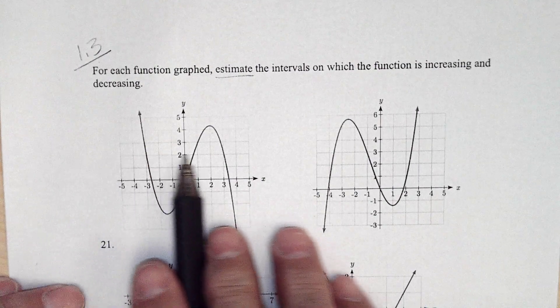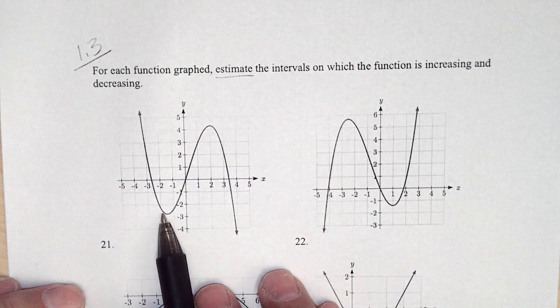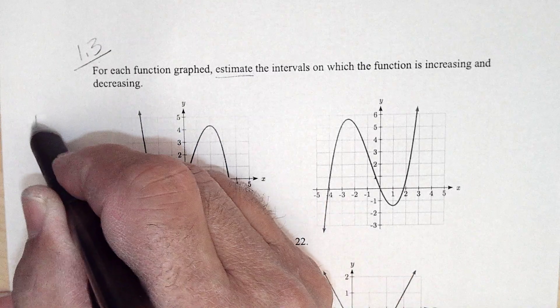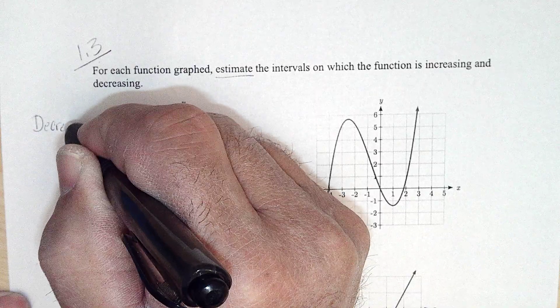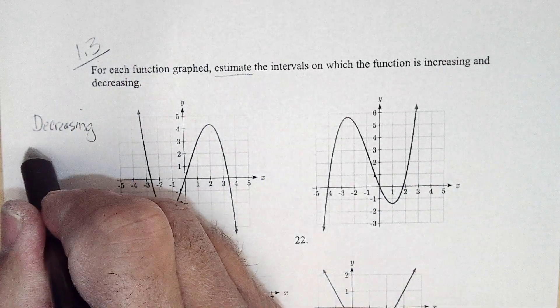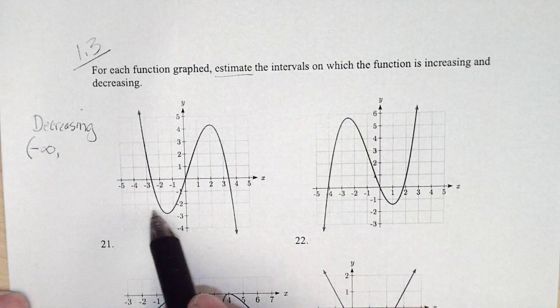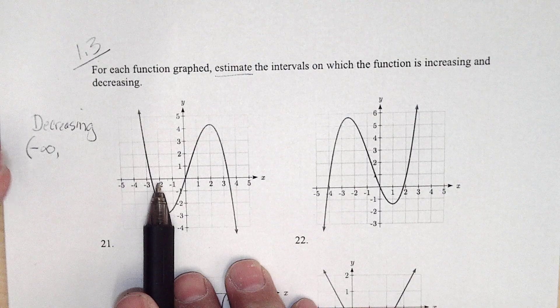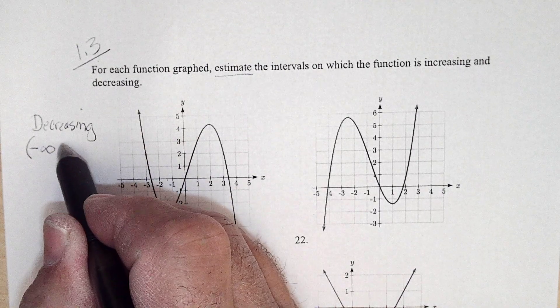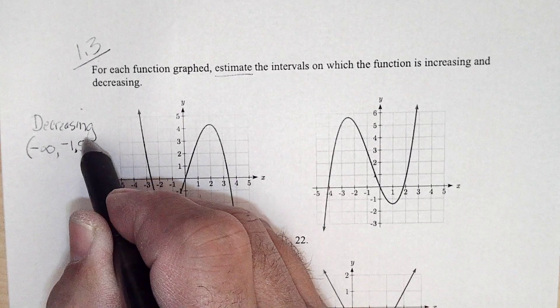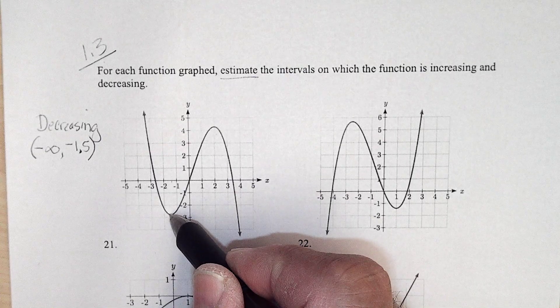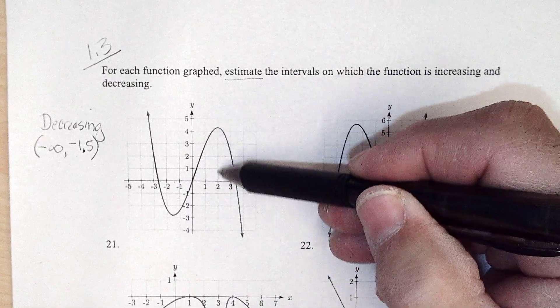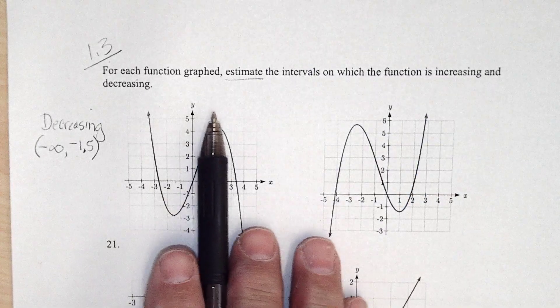So as I go left to right, the height of the function is getting less, so it's decreasing till about negative 1.5. So it looks like it's decreasing from negative infinity up to negative 1.5 or negative one and a half. We always do this in terms of x, not how high it is, but for what x is the height going down. And at negative one and a half it's changing, so we don't include it. That's why it's a parentheses.